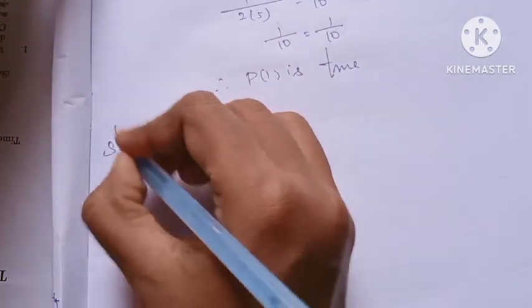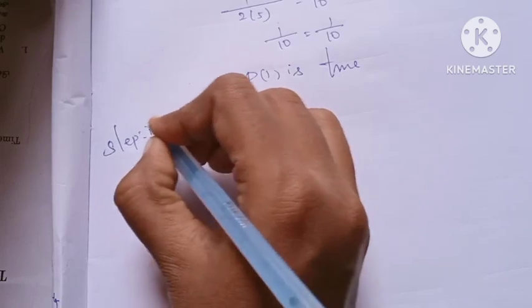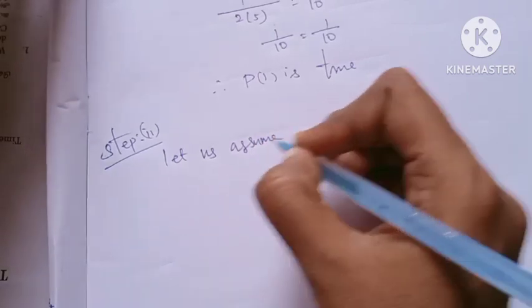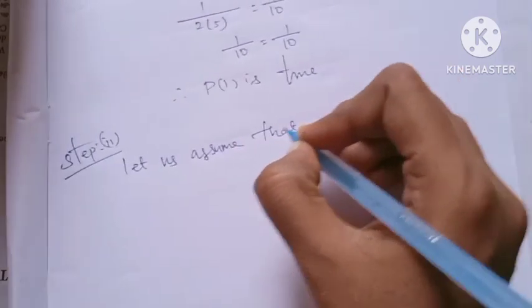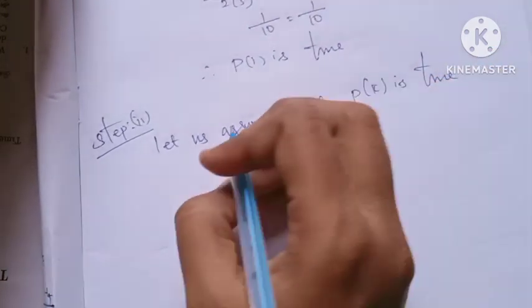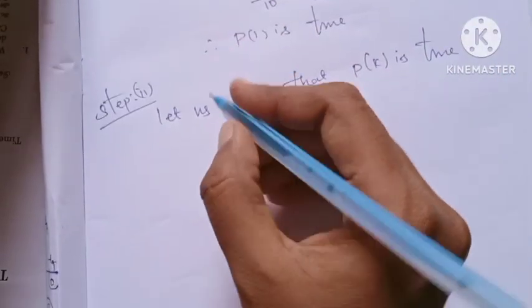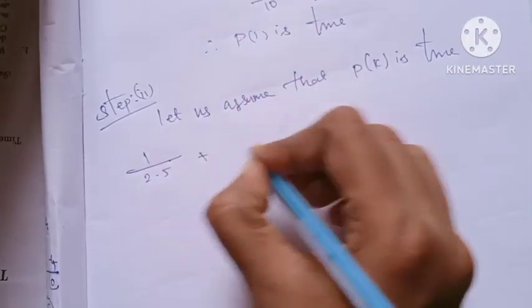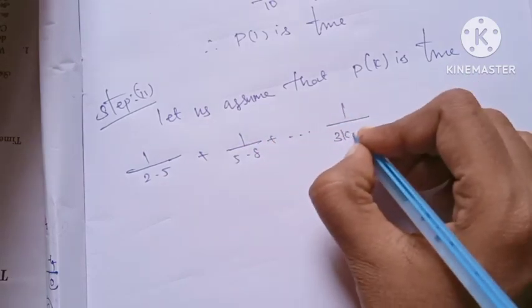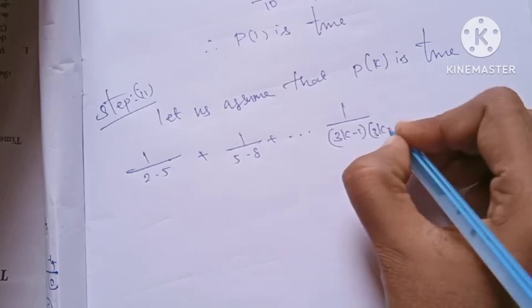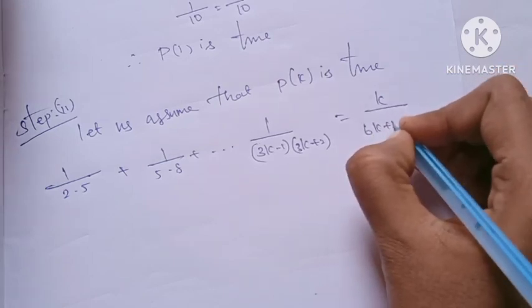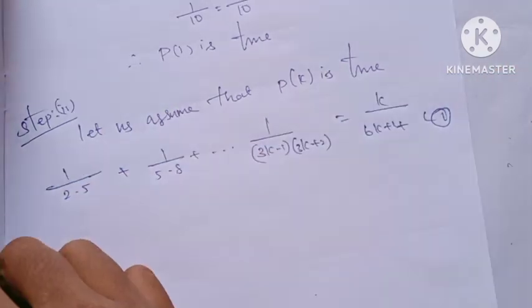Step 2: Let us assume that P(k) is true. That is, 1/(2·5) + 1/(5·8) + ... + 1/((3k-1)(3k+2)) = k/(6k+4).